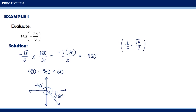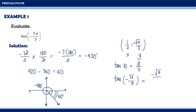But since the angle is in the fourth quadrant, y is negative. So the coordinates of negative 420 degrees are (1/2, −√3/2), where x = 1/2 and y = −√3/2. Since tangent θ = y/x, tangent of negative 7π/3 equals (−√3/2) / (1/2) = −√3/2 × 2/1. Therefore, tangent of negative 7π/3 is equal to negative √3.